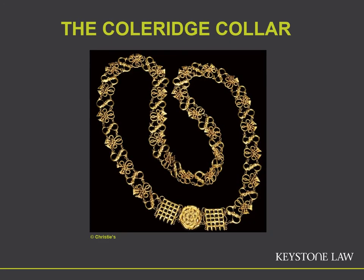Here is the Coleridge collar. As you can see, it is a gold collar with S-shaped links, so it would have been known as a collar of S's, of the sort worn by the holder of the judicial office known as the Lord Chief Justice of the Common Pleas — an office which is no longer in existence. It was the tradition and belief of the Coleridge family that this collar dated back to Tudor times, whereas Sotheby's expert opined that it could not date back earlier than the late 17th century. The judge said that Sotheby's expert was entitled to reach that opinion and that it was not unreasonable.